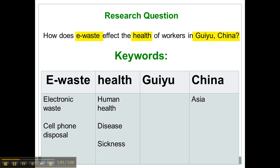For health, I could use 'human health,' 'disease,' or 'sickness.' And for the specific name of the place, I'll probably leave that the same, or if I want to broaden a little bit, I could just use the word 'Asia.' So right now I have quite a few keywords to put into my search engine or to look into the index of a book in order to find information.